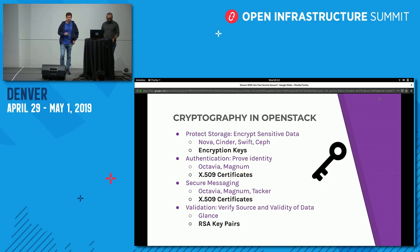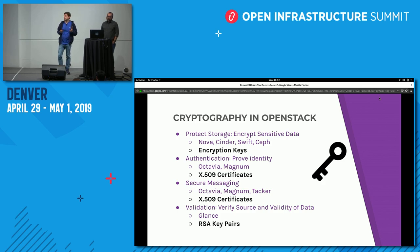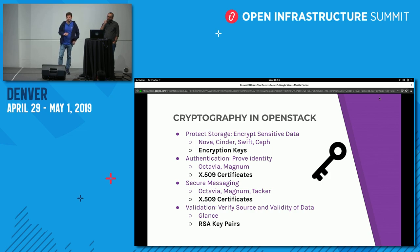In OpenStack, protecting storage is in the realm of Nova, Cinder, and Swift — those services will have encryption keys that need a place to be stored. For authentication and proving identity, Octavia and Magnum are relevant: Octavia for load balancers, associating instances with the appropriate tenant, and Magnum for container clusters to control who has permissions. Secure messaging also applies to Octavia and Magnum. For software integrity, Glance and Nova work together — before launching an image, you can check its signature to validate it's a valid image before it boots.